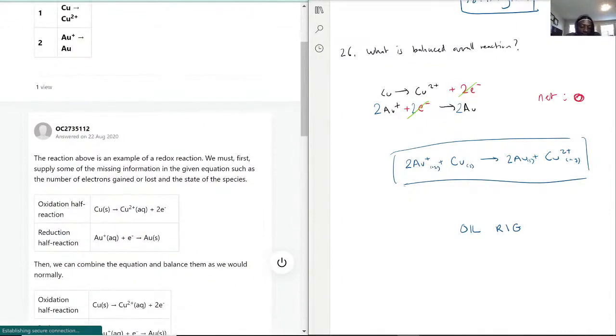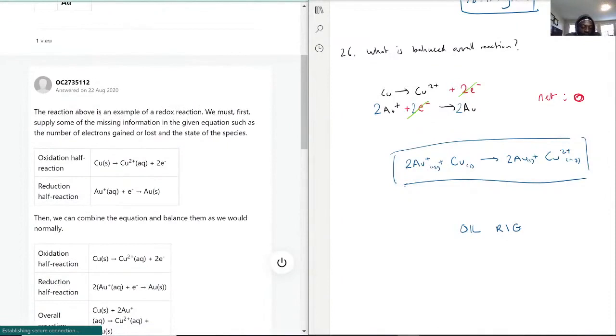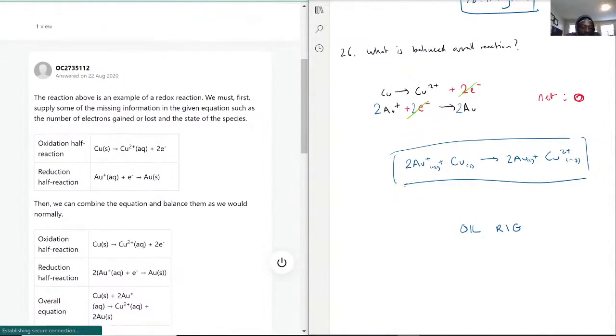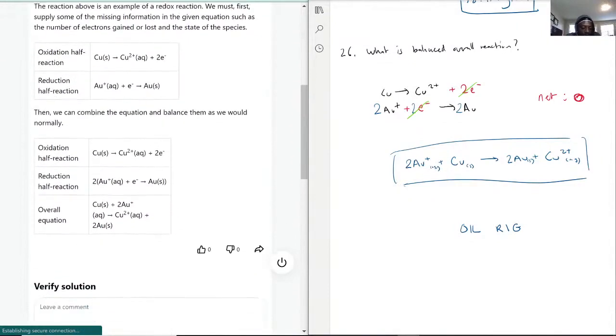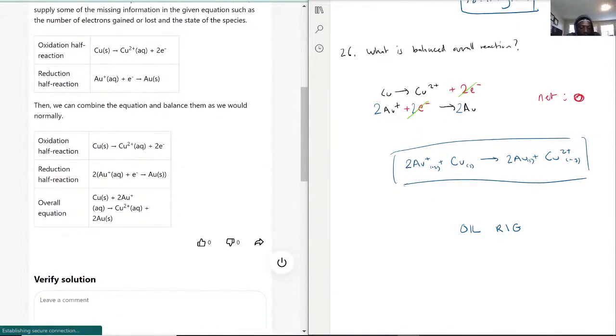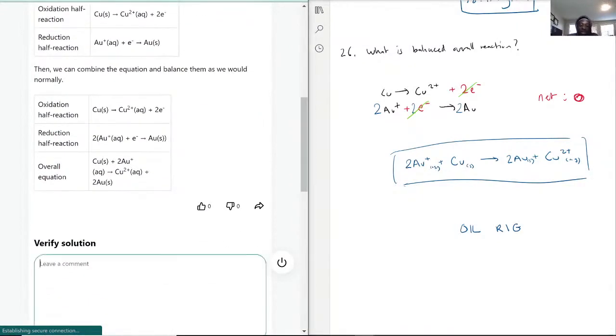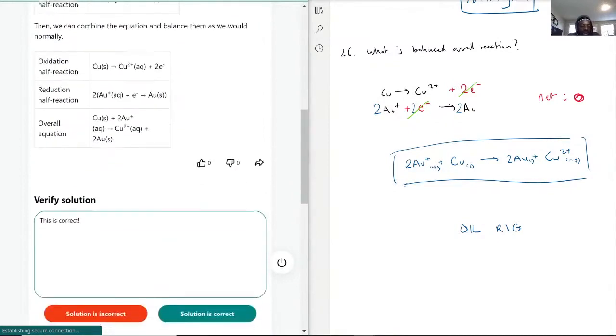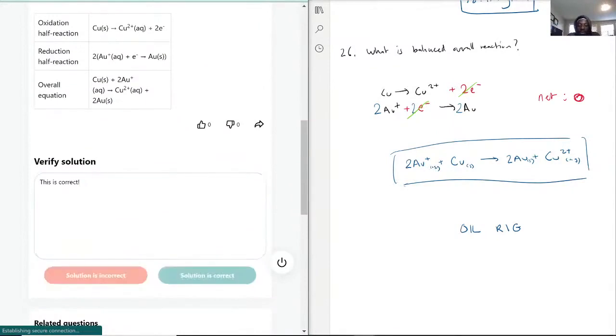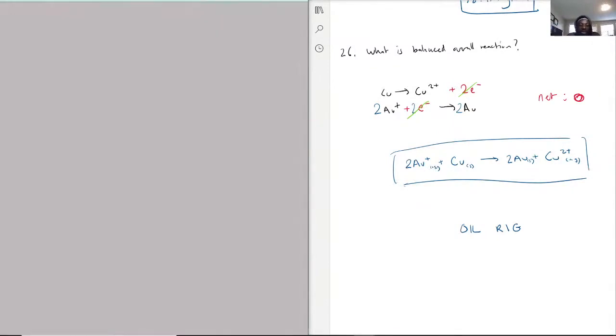That is exactly what it has here, and then you have to double it to make up for the copper. Now when you put it together, the overall equation - copper plus two gold is equal to copper 2+ plus two gold solid. This is correct.